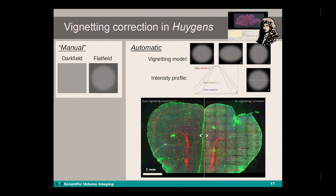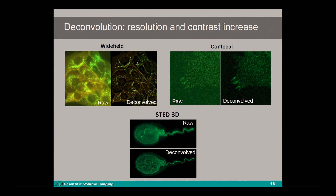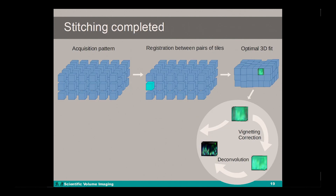Another example is this four-channel image of the cortex of a mouse embryo. Next to vignetting correction, there is the option to deconvolve the tiles before they are actually being stitched. This can be done by loading the common Huygens microscopy parameter template and deconvolution template file during one of the stages in the stitcher wizard. I think I do not need to address with this audience the need for deconvolution if you are interested in high resolution detail and high contrast in stitched images. Within the stitching wizard workflow, the vignetting correction and deconvolution step can also be omitted.